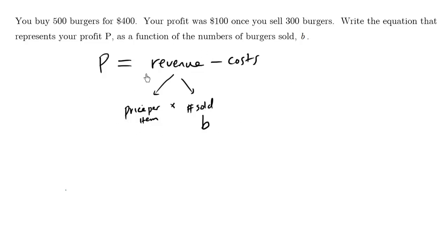Based on this formula, we can plug in some information. You buy 500 burgers for $400. Your business involves costs, so your cost here is $400. Your profit is $100, so we'll just say 100, that's the P value, equals once you sell 300 burgers. The cost here is going to be $400.